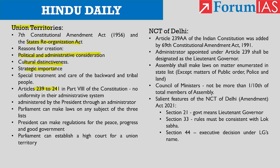Regarding the powers of Parliament to make laws in union territories: Parliament can make laws on any subject of the three lists, including the State List, for the union territories. Also, the president himself can make regulations for the peace, progress and good government of Andaman and Nicobar Islands, Lakshadweep, Dadra and Nagar Haveli, and Daman and Diu. A regulation made by the president has the same force and effect as an Act of Parliament. Besides that, Parliament can establish a High Court for union territories.